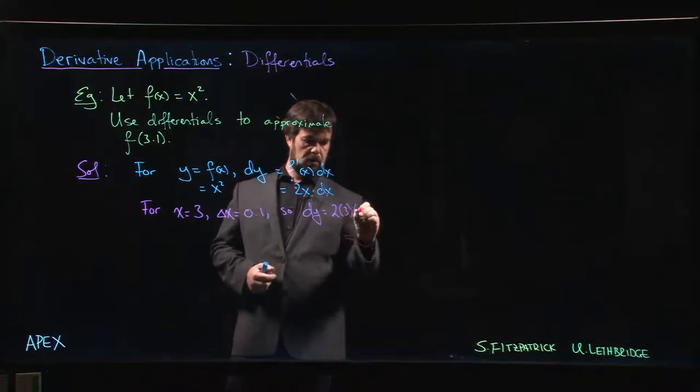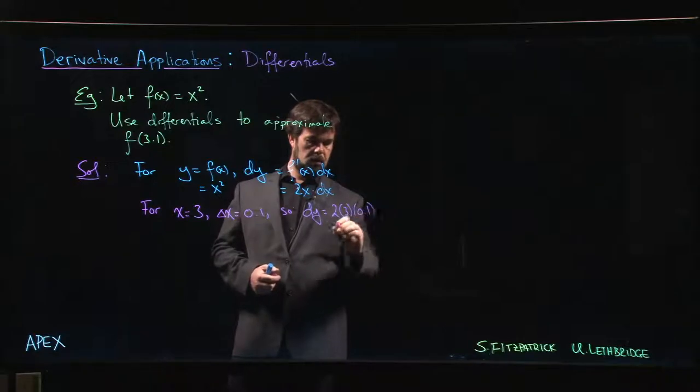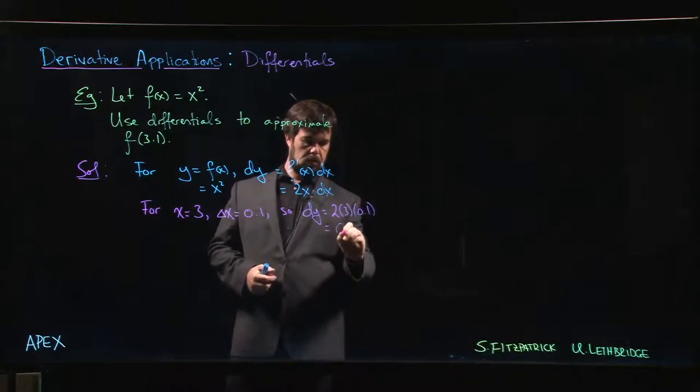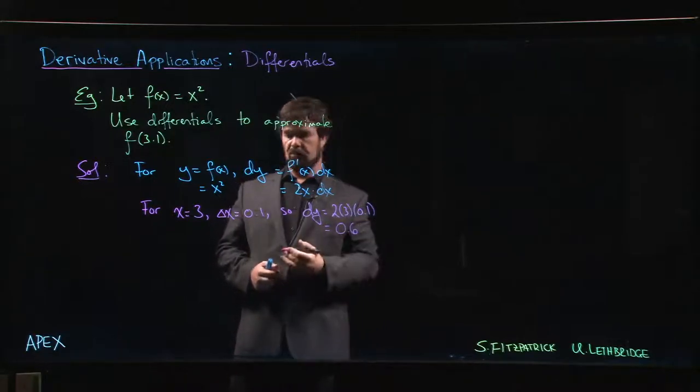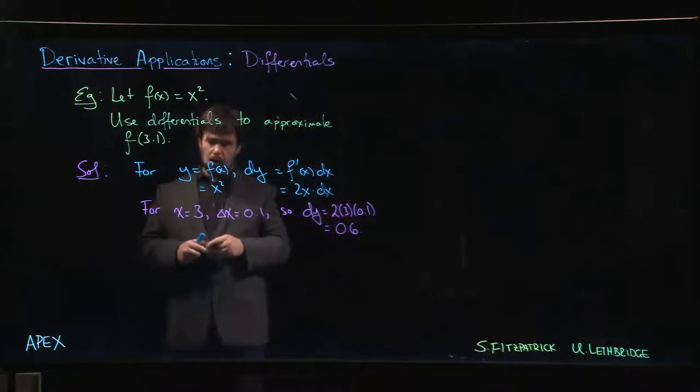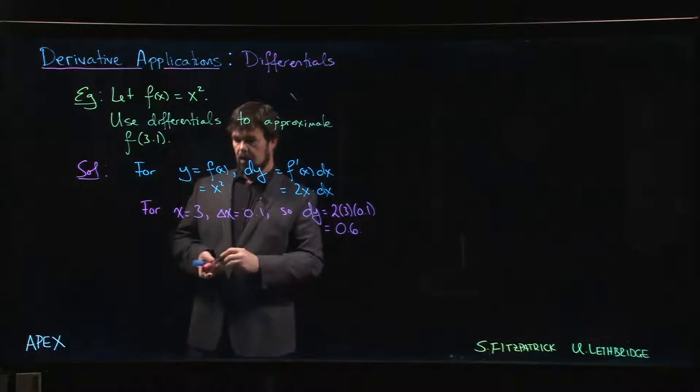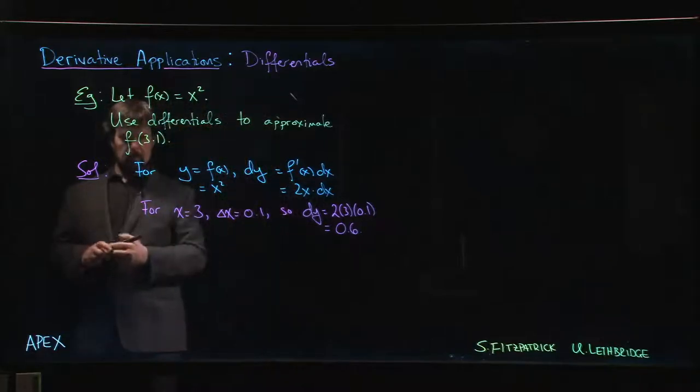2 times 3 times 0.1, which is 0.6. So what do we do with that dy?